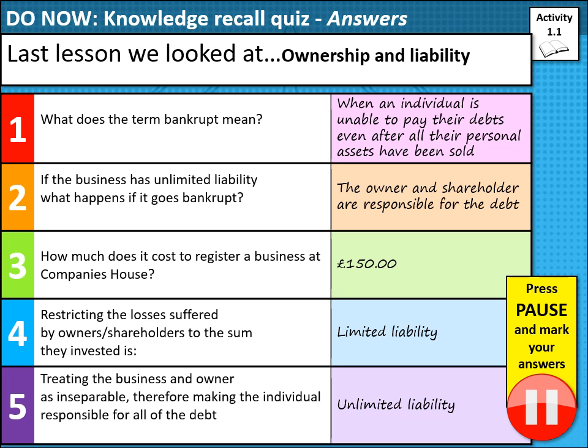Let's look at the answers. What does the term bankruptcy mean? It's when an individual is unable to pay their debts even after their personal assets have been sold. Personal assets are things like a car, your house, expensive jewellery worth a few thousand pounds, a very expensive TV, a PS4 — anything that could be sold off to pay all your debts.